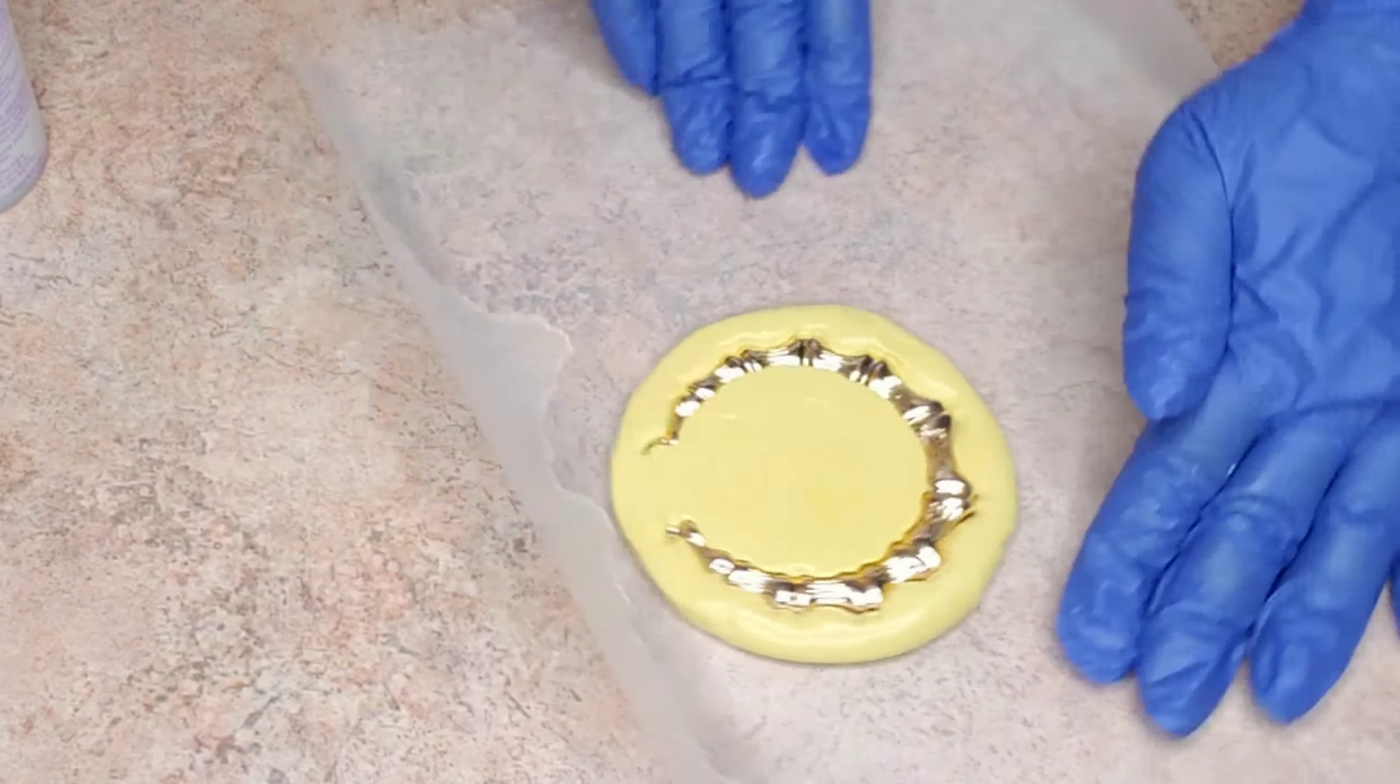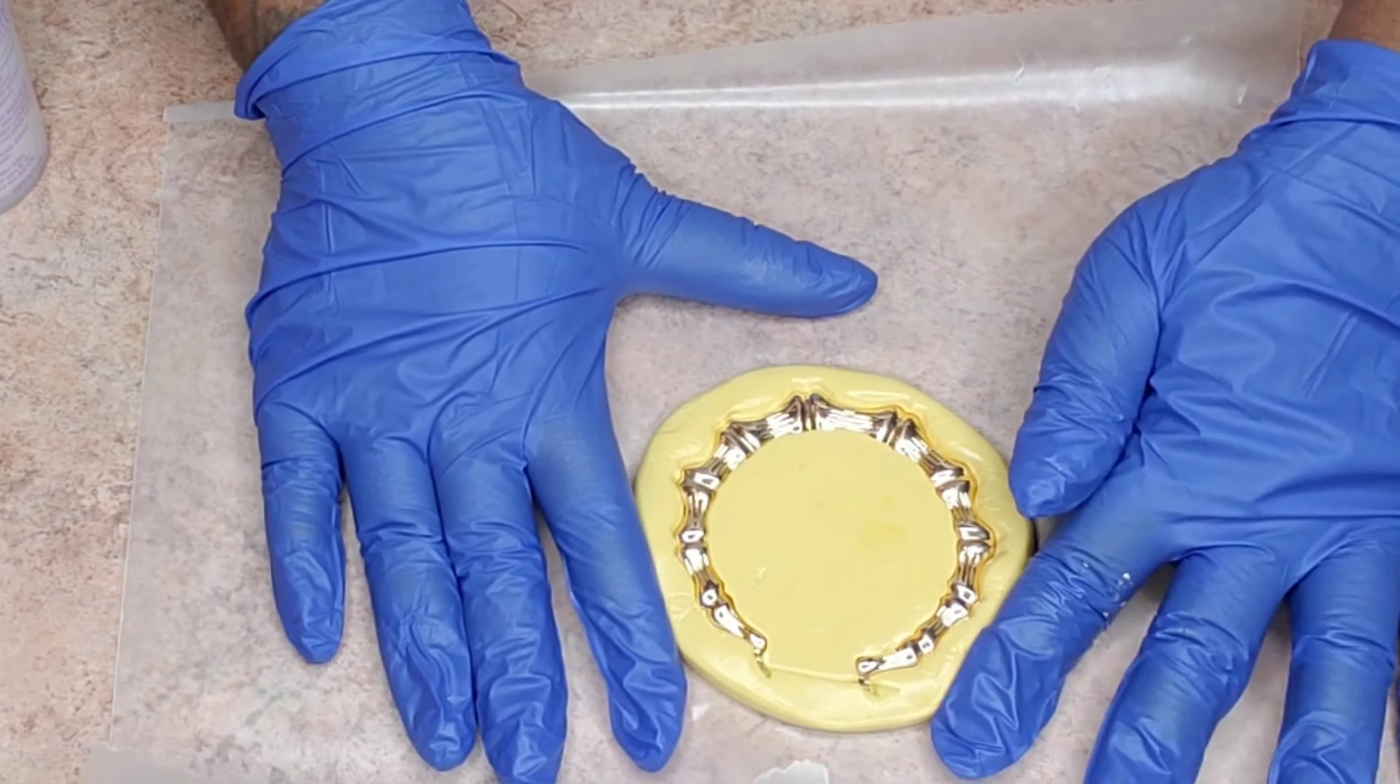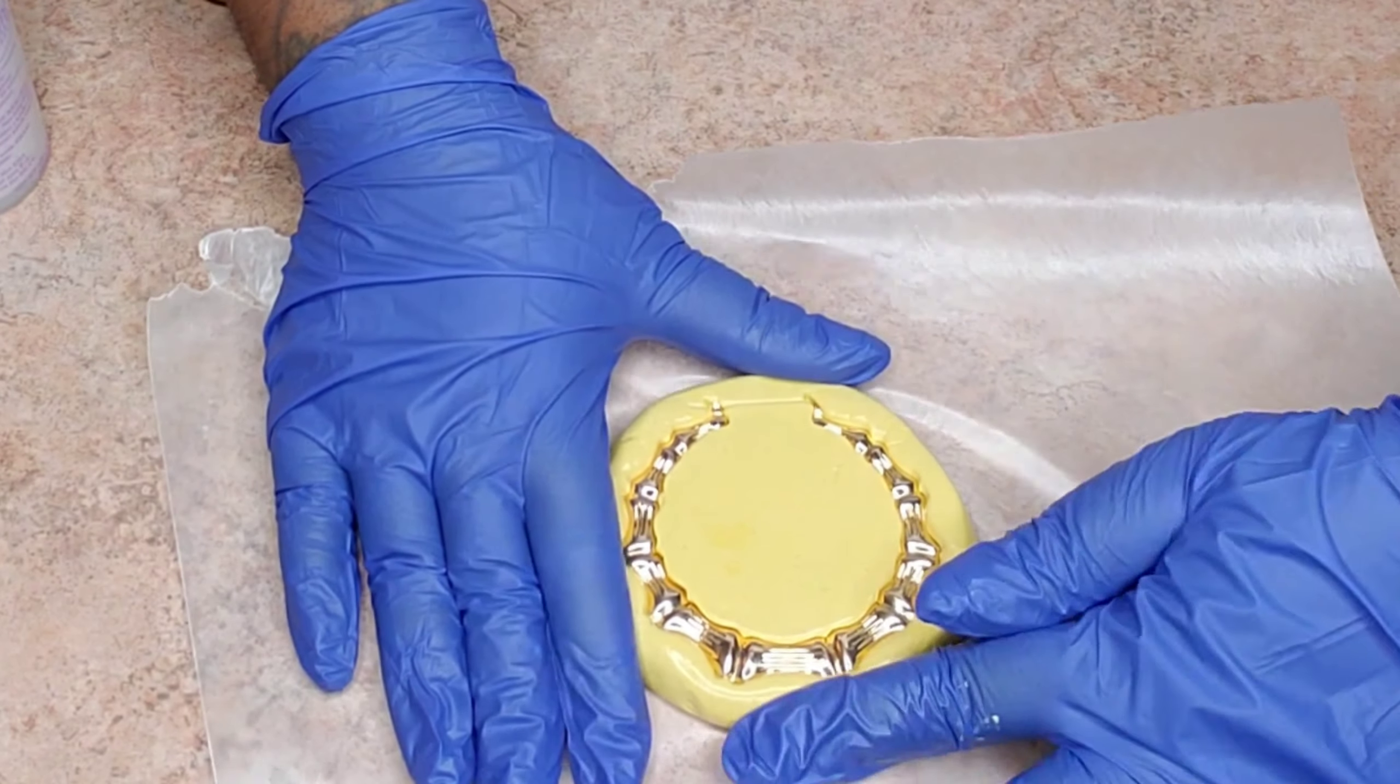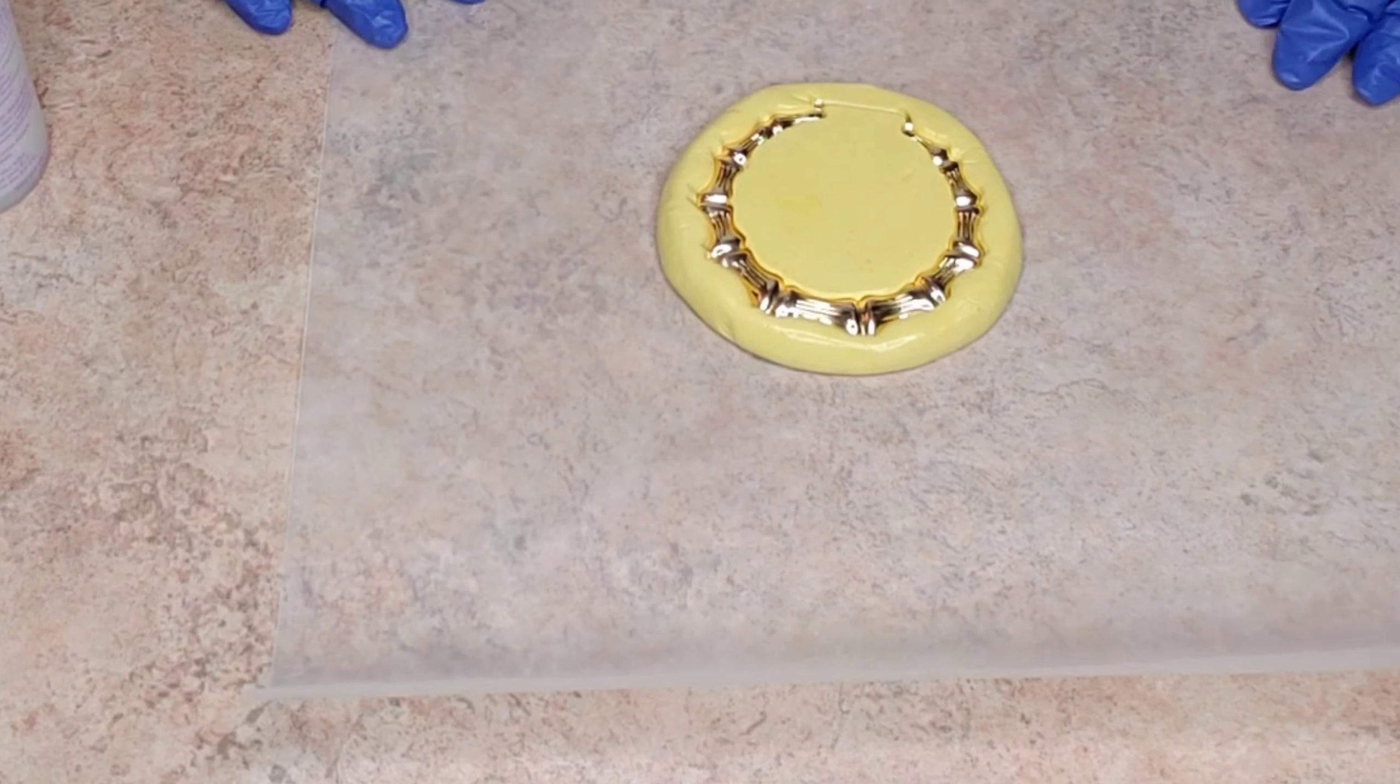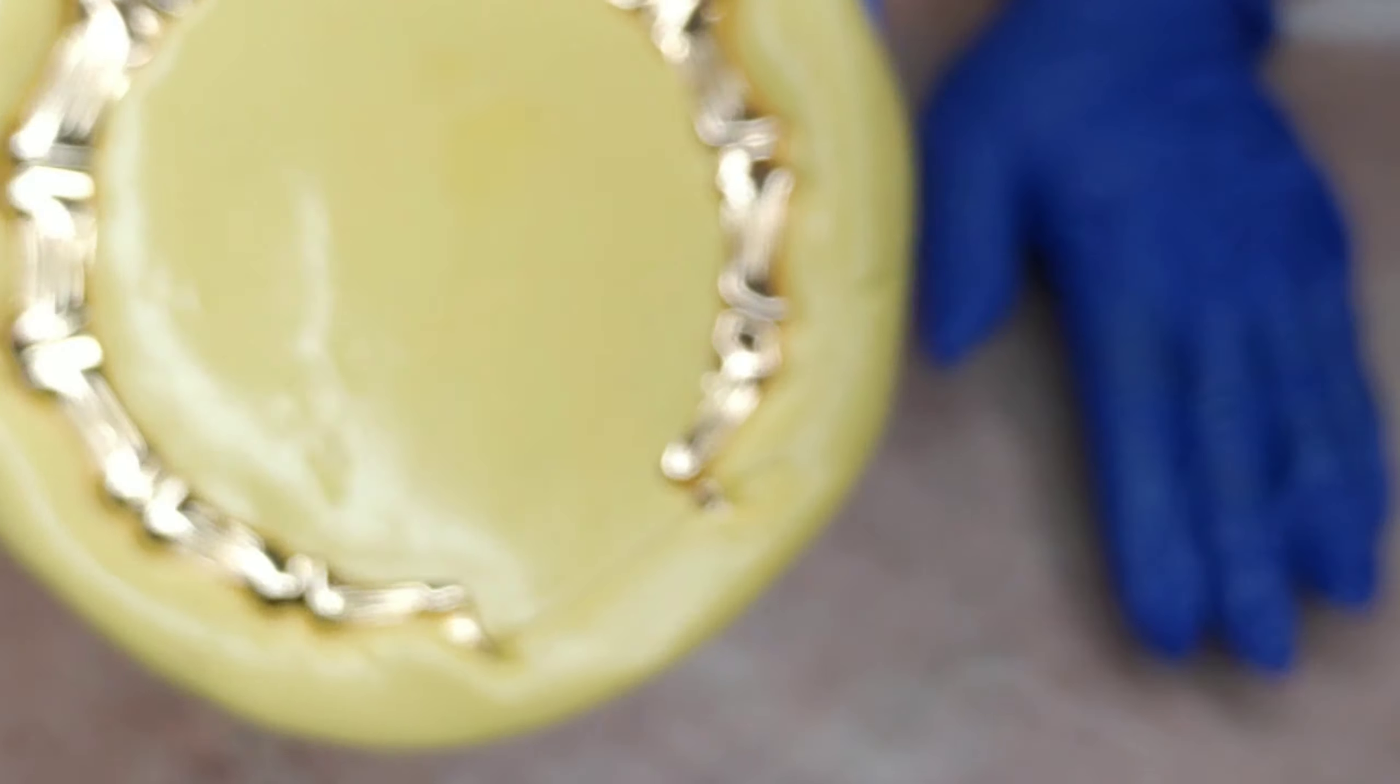You want to take the silicone putty and push it against your product. That way, once it hardens and you take the earring out, the silicone mold has all the grooves and definition you're looking for.